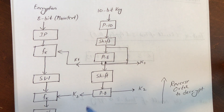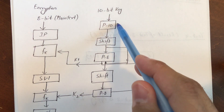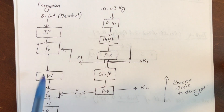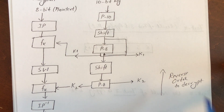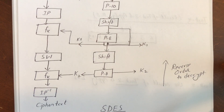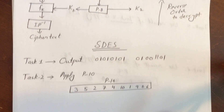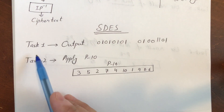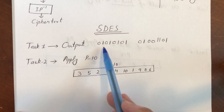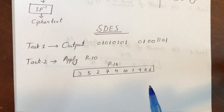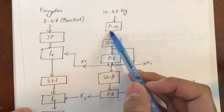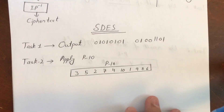We'll see how we can generate these two keys using permutation, shifting, and all that. Then we will run the encryption as well. If you want to decrypt, you just have to do it in reverse order. Let's start with Task 2 — I believe everybody is good with Task 1, where you just had to calculate the ASCII key code for your first two letters.